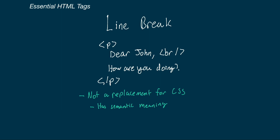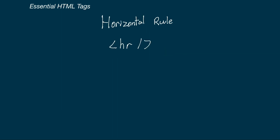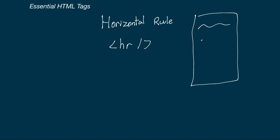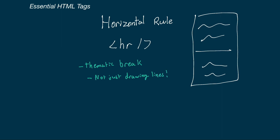The horizontal rule or HR tag is a self-closing tag that provides a thematic break in the content. By default, the browser draws a horizontal line across the screen. So in a blog post with two sections, if those sections need a thematic break between them, we use an HR tag. Importantly, the HR tag should not be thought of as just the 'horizontal line tag' — it is a thematic break with semantic meaning. If you just need a horizontal line for visual reasons, do that with CSS; use the HR tag only when you need that thematic break.